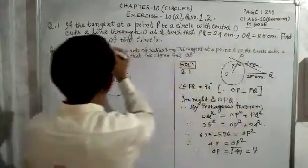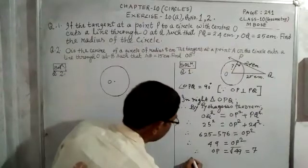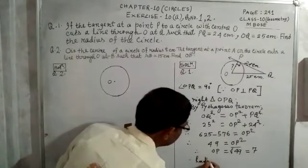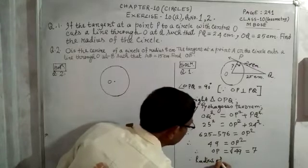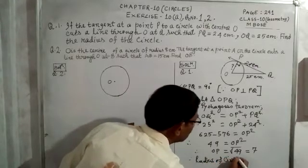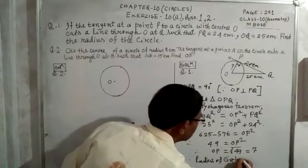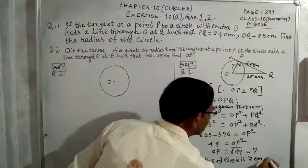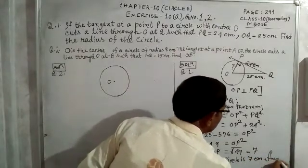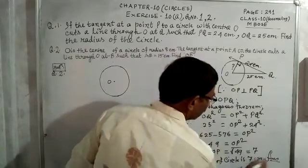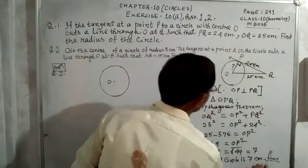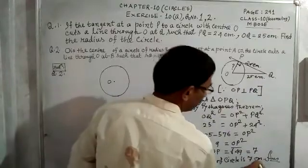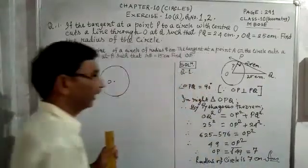The question asked us to find the radius of the circle. Therefore, the radius of the circle is 7 centimeters. We write the unit in centimeters because the problem was given in centimeters. That is the answer.